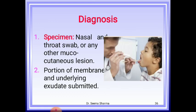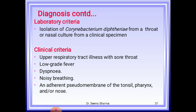Diagnosis: specimens — nasal and throat swab or any other mucocutaneous lesion — should be taken. A portion of membrane and underlying exudate is also submitted. The CDC definition of diphtheria is based on both laboratory and clinical criteria. Laboratory criteria: isolation of Corynebacterium diphtheriae from throat or nasal culture. Clinical criteria: upper respiratory tract illness with sore throat, low-grade fever, dyspnea, noisy breathing, and adherent pseudomembrane of the tonsil, pharynx, and/or nose.